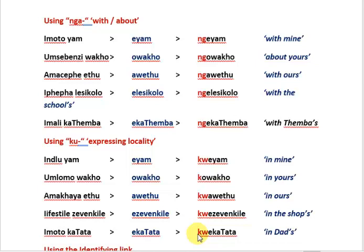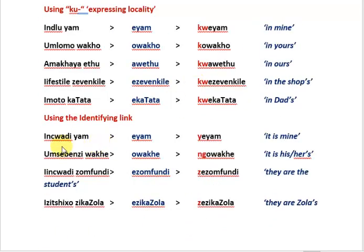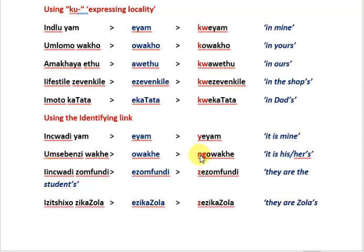Using the identifying link — the link used in front of the noun. 'Incwadi yam' — my book; 'eyam' — mine; 'yeyam' — it is mine. If you put 'y' in front of 'incwadi' you say 'it is a book', so 'yeyincwadi', and we use that 'y' to get 'yeyam' — mine. 'Umsebenzi wake' — his work; 'owake' — that of him; 'ngowake' — it is his. We would have said 'ngumsebenzi', therefore 'ngowake'.